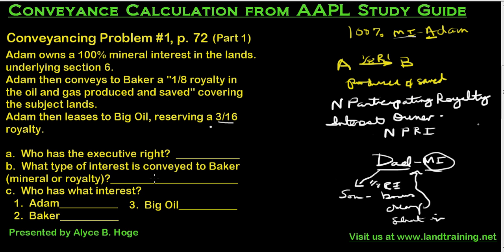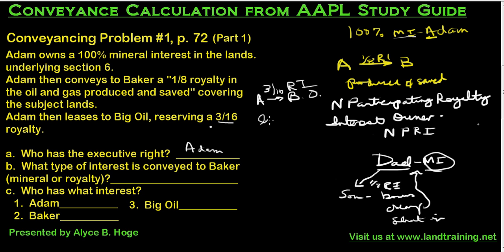Before there is a lease, dad is saying: 'Son, if I ever get any money from this land, I'm going to give you part of the royalty I receive under the lease.' So dad has the executive right — it's Adam. Then Adam leases to Big Oil and reserves a 3/16th royalty interest. So the royalty under the oil and gas lease is 3/16ths, and that's what Adam is entitled to under the lease.